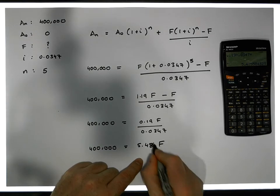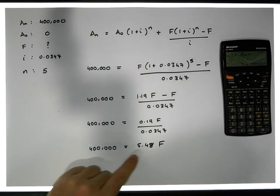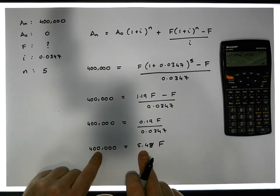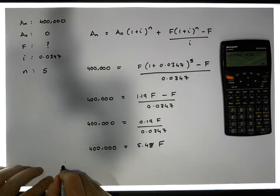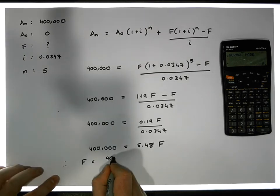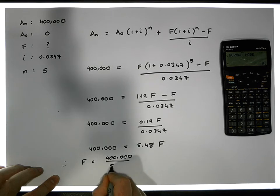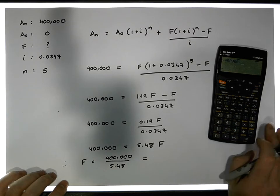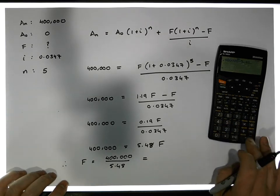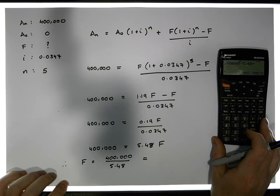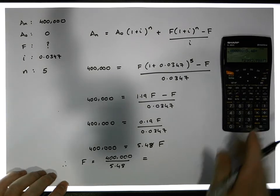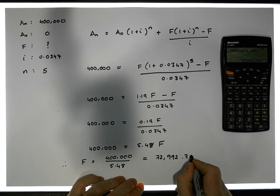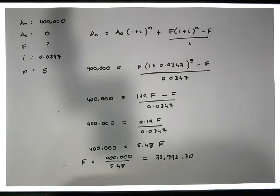Rounding to two decimal places, 400,000 = 5.48f. Dividing both sides by 5.48: f = 400,000 / 5.48. Let's calculate that — 400,000 divided by 5.48 gives us a value of seventy-two thousand, nine hundred and ninety-two euros and seventy cents, i.e., f ≈ €72,992.70.